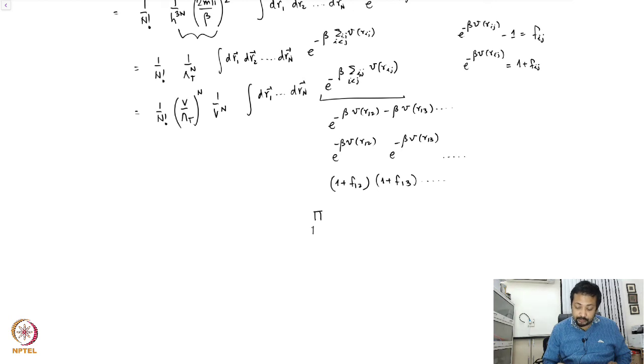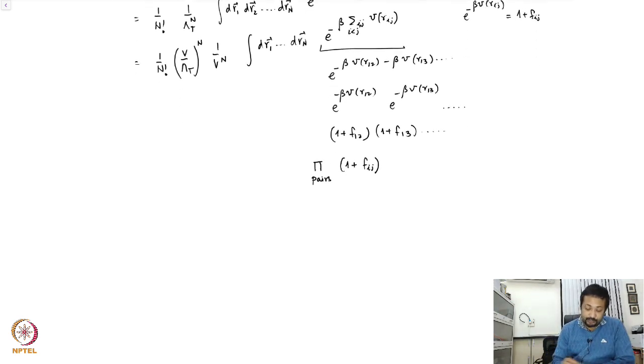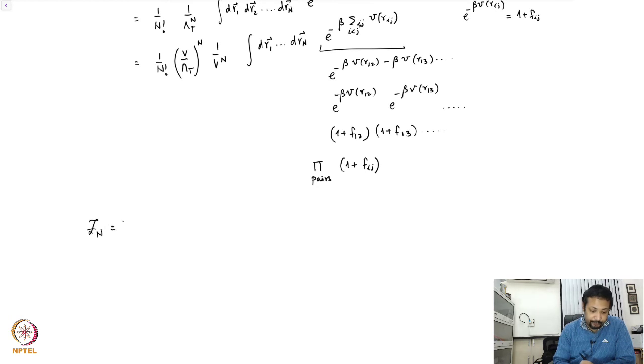So that this becomes product over pairs 1 plus f_ij. So the canonical partition function then takes the form 1 over n factorial V over lambda_t raised to the power n, 1 over V to the power n, integral dr_1 dr_n product over pairs 1 plus f of ij.